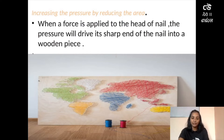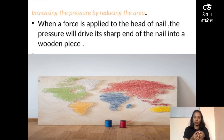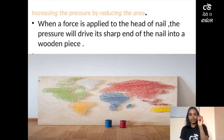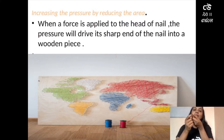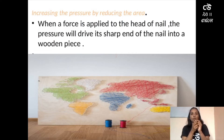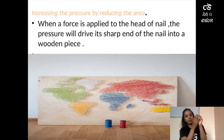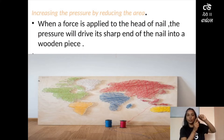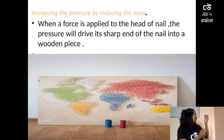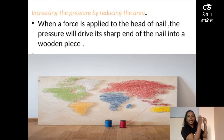Here I have displayed a board where nails have been hammered in to create string art. Whenever we want to hammer a nail into a wall or any object, we place the end where the area is less and hammer the other end. For example, if I want to hammer this nail into a wall, I place the pointed end — which has less area — and hammer the flat end. Due to the force exerted by the hammer and the smaller area at the tip, the nail is driven into the wall.